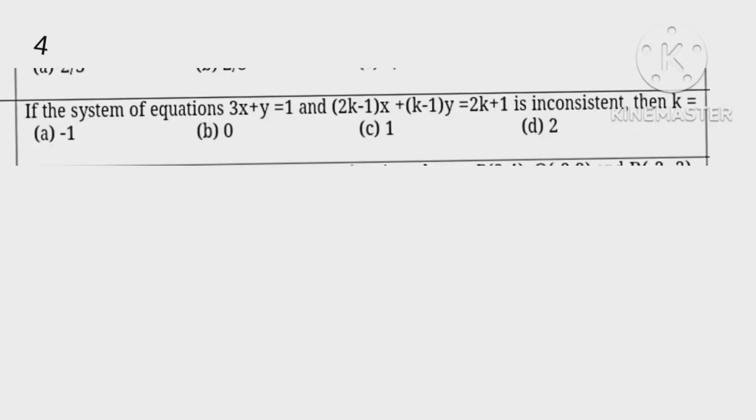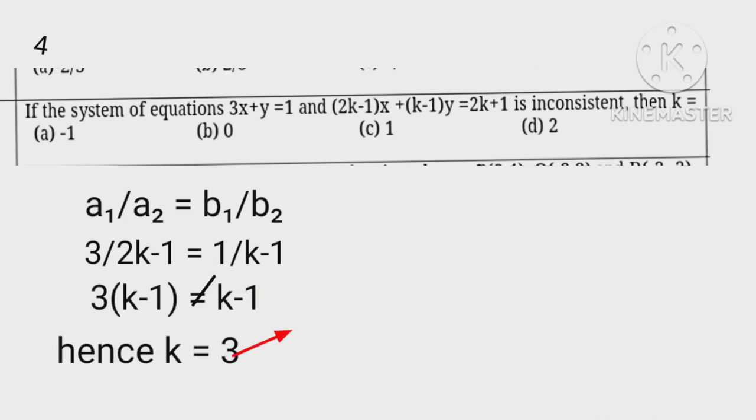Applying condition for being inconsistent, a1 upon a2 is not equal to b1 upon b2. We get 3 upon 2k minus 1 is not equal to 1 upon k minus 1. Three times k minus 1 is not equal to 2k minus 1, hence k is not equal to 3.